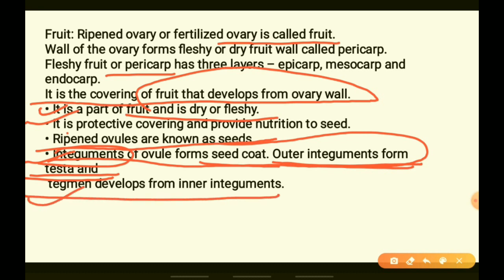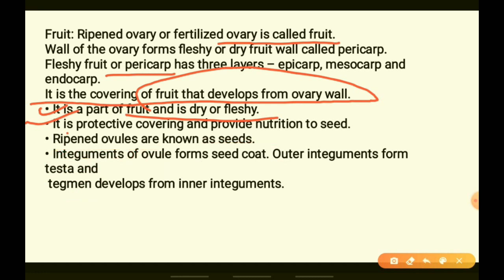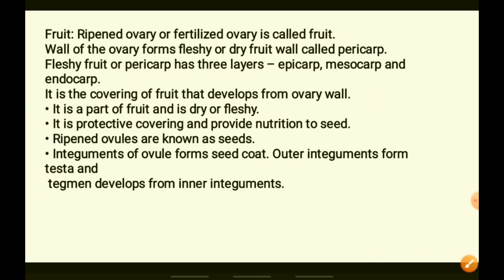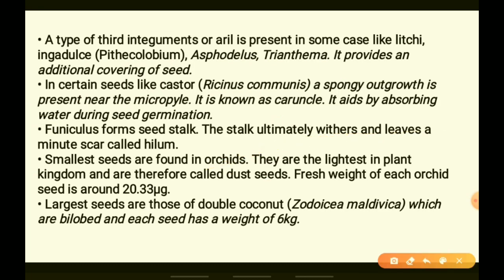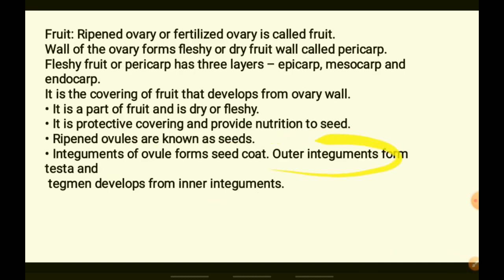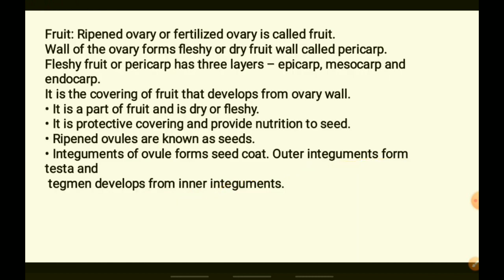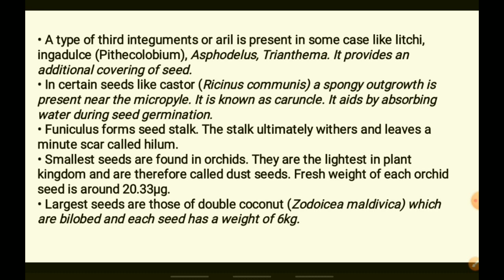Testa is the outer layer and tegmen is the inner layer of the seed coat. Sometimes in the ovule a third type of integument is also present, which is known as aryl.